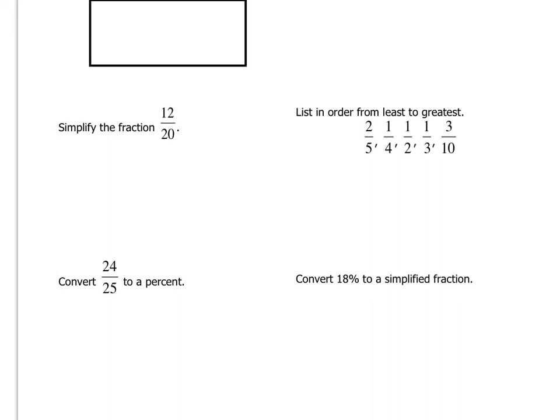Here it says convert 24 over 25 to a percent. We want to think what number percent compares all numbers to 100, so we're going to want to convert that denominator 25 to 100. Well, 25 times a certain number equals 100. Once you figure out what that number is, you're going to multiply the top by that same number. Whatever you multiply the bottom by, you'll multiply the top by, which is kind of the reverse of simplifying the fraction. You'll have 100 on the bottom and the number you have on the top will be your percent.